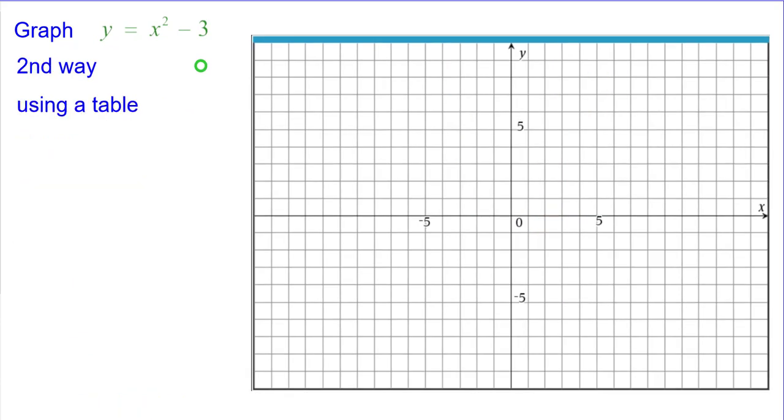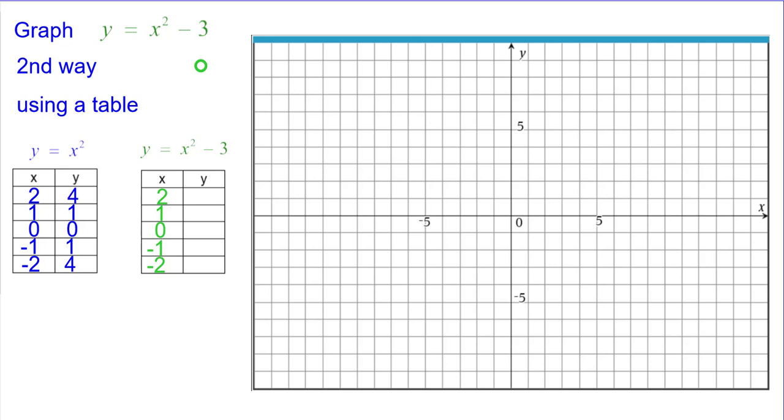The second way is using a table. So we're going to start off with the traditional y equals x squared table, those five points. And here's our table of x squared minus 3.